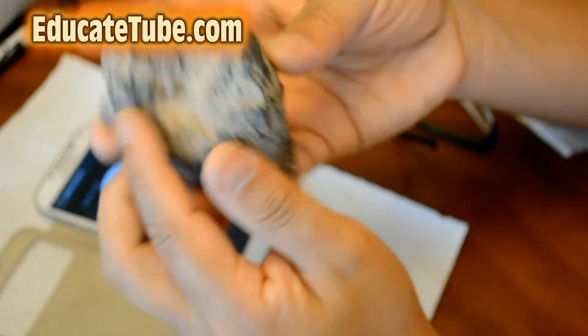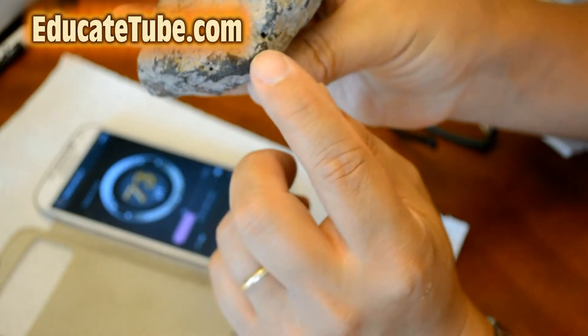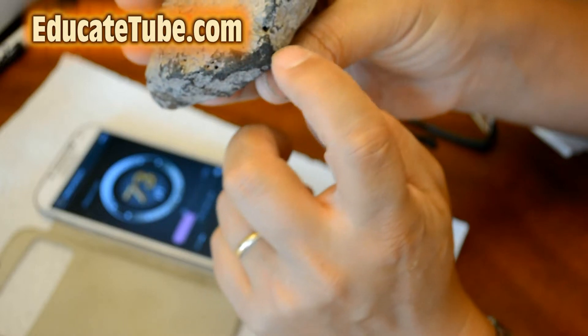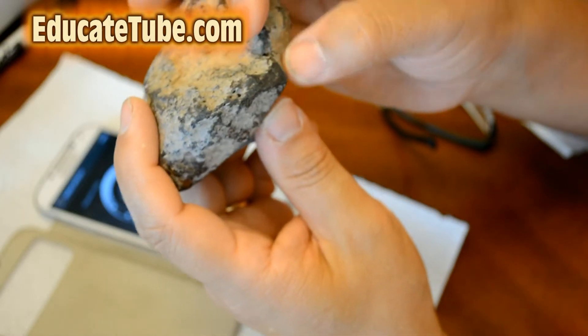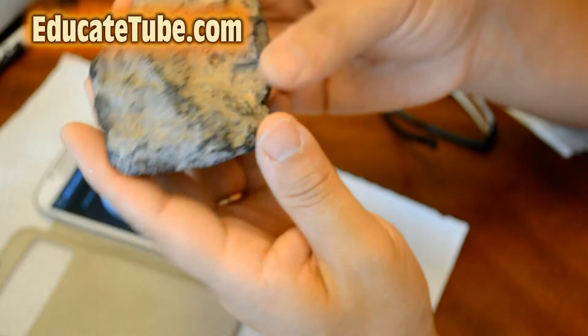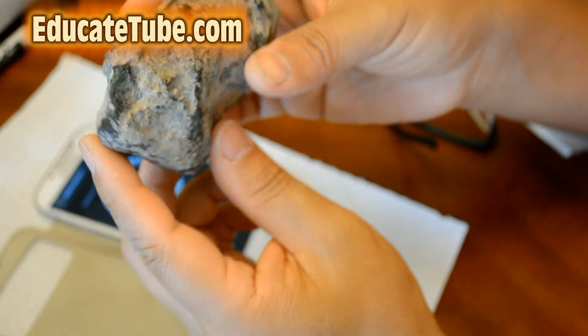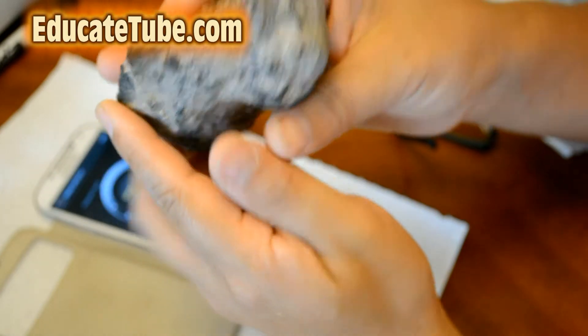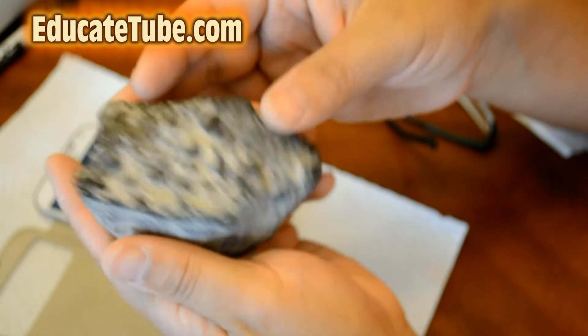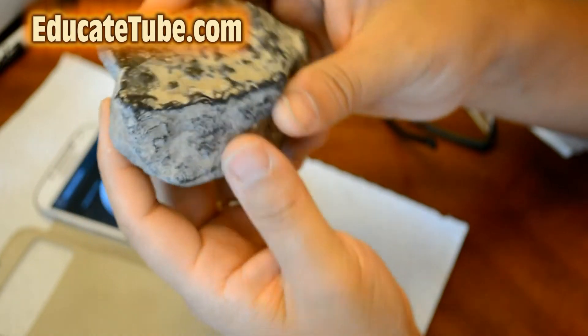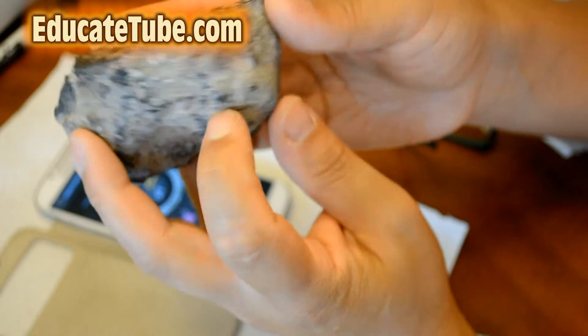The only thing that did not pass for meteorite testing is that it gives a streak line, black line, so it looks like it's magnetites, but the density doesn't match the magnetites. So I am perplexed on what the heck this rock is. Please tell me what it is.